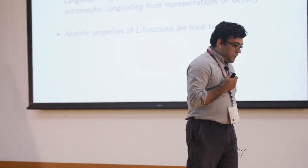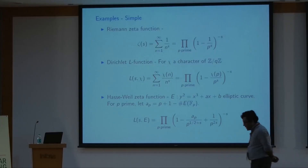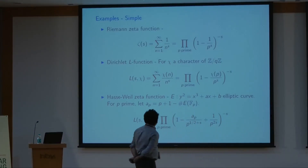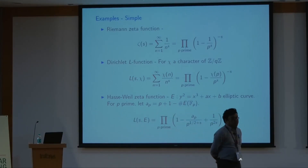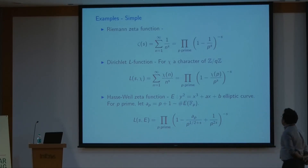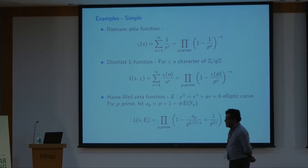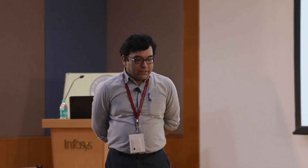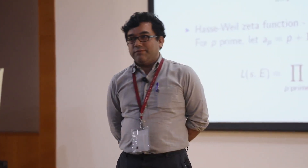The most important problem about L-functions is to understand their analytic properties. Let me start with some very basic examples. We all know about the Riemann zeta function, which is related to the Riemann hypothesis — one of the most important problems in mathematics. It's defined as zeta(s) = sum of 1/n^s, where n runs from 1 to infinity. If you take s to be a real number larger than 1, you can show from basic calculus that it is a converging series.